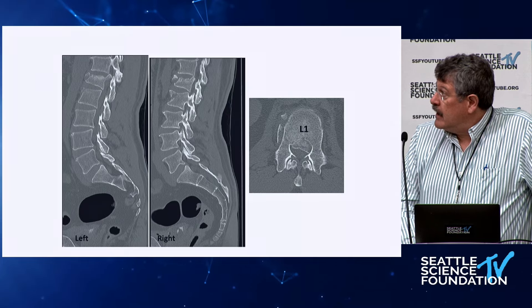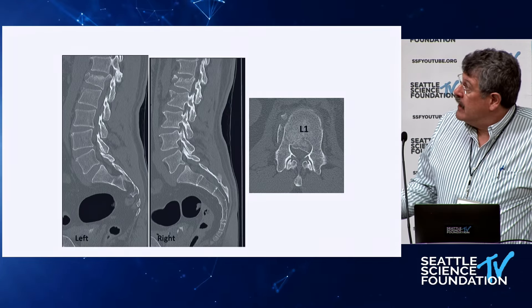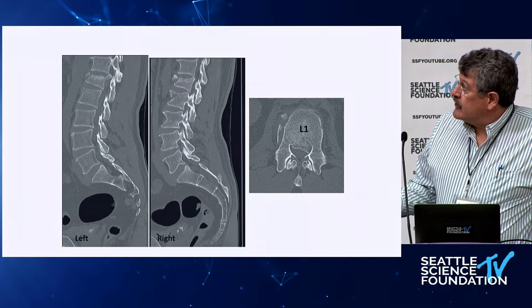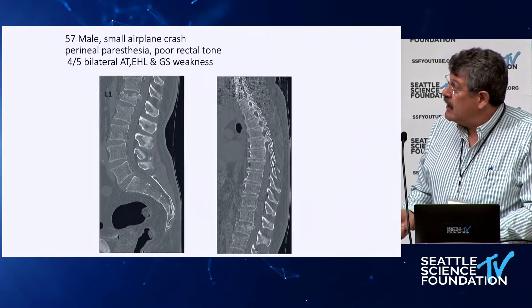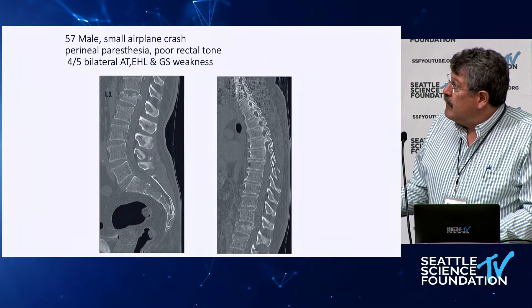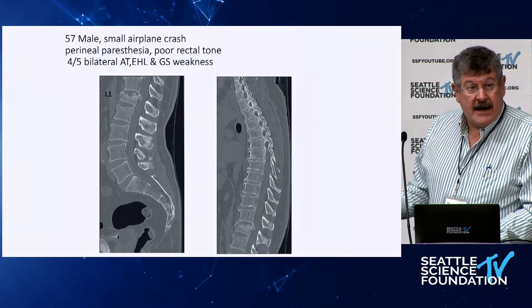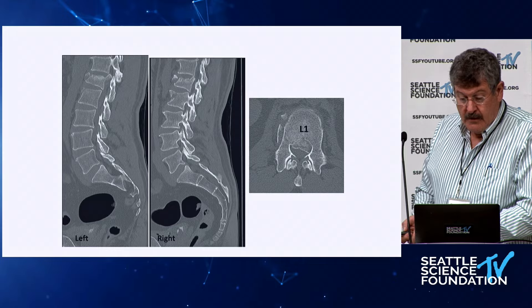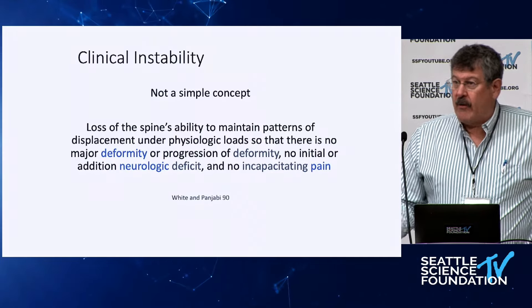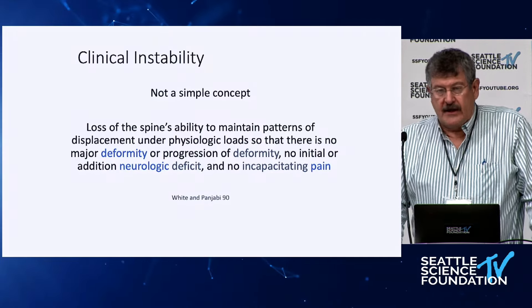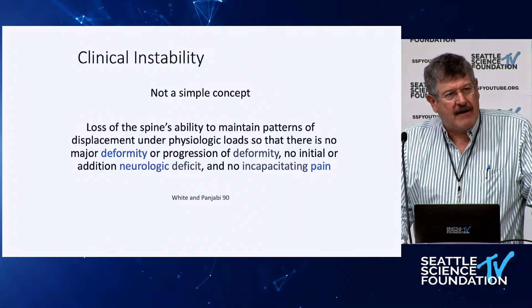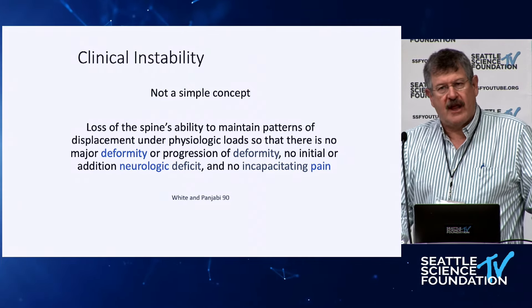You can see the fracture pattern — injury here and here, maybe a facet injury, maybe a little fracture in the spinous process. So how are we going to classify this? The simplest concept: what we want to know about thoracolumbar fractures is are they stable or unstable?